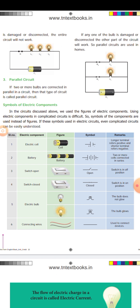The longer terminal refers to positive and the shorter terminal refers to negative. Battery — a combination of cells. Two or more cells connected in series make a battery.